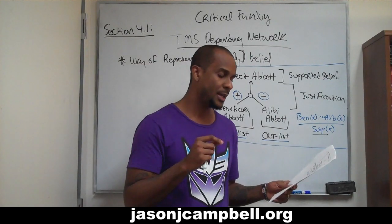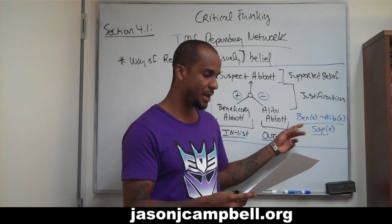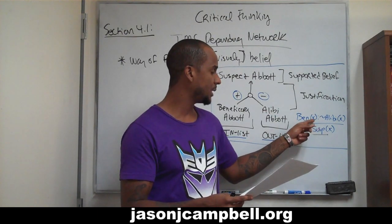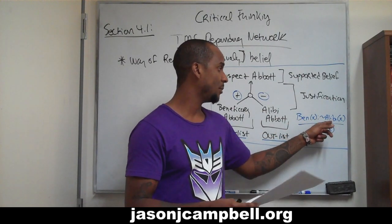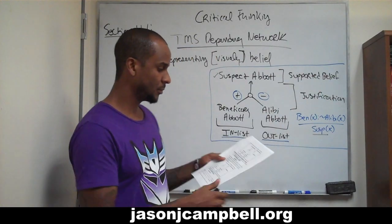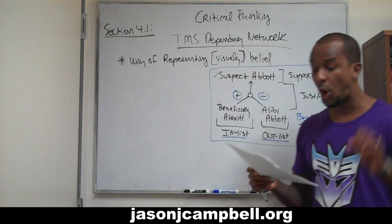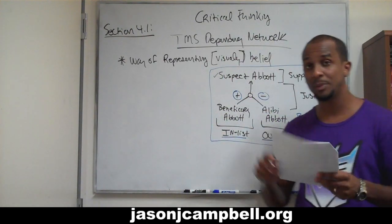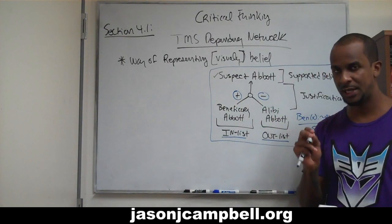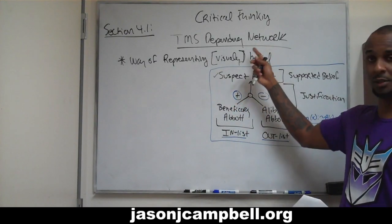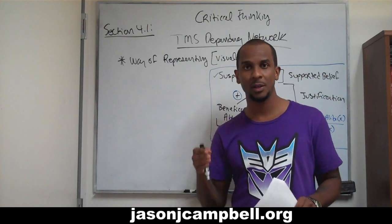If Abbott has no alibi and is the beneficiary, then the following is true. Beneficiary: if it's provable that X is the beneficiary and it is consistent to assume that X has no alibi, then X is our suspect. Assertions in the justification-based truth maintenance system dependency network are believed — not true. They're a belief. This is a system of supporting and justifying belief, not truth.